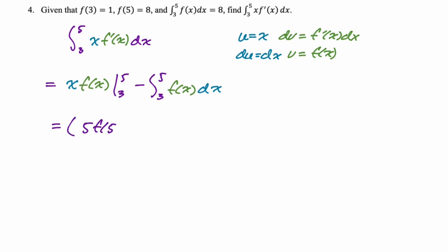And then minus the value of that integral, which we were told was 8. So minus 8. Now we have to fill these in, so it's going to be 5. f of 5 is also 8 for some reason. Minus 3. And then f of 3 is 1. And then minus 8. So that's 40 minus 11, which is 29. That's the entire problem set. I hope this was helpful, and good luck. Thank you.